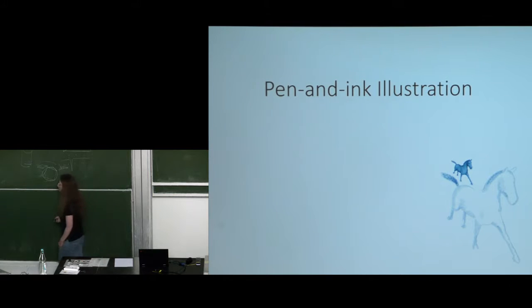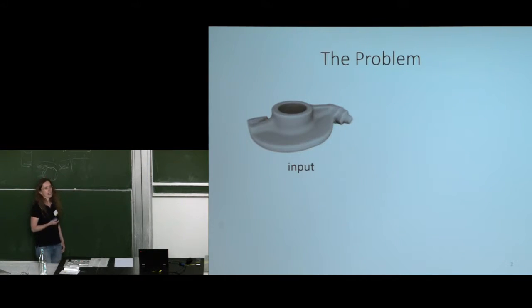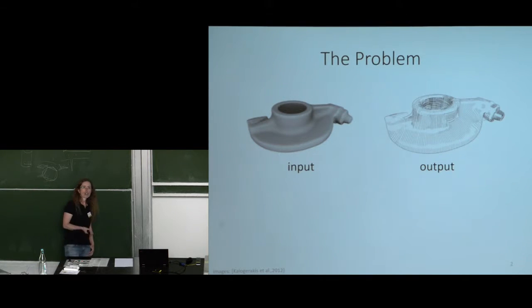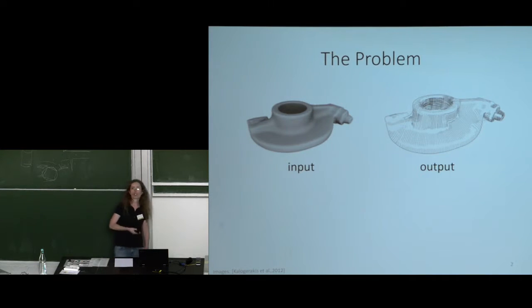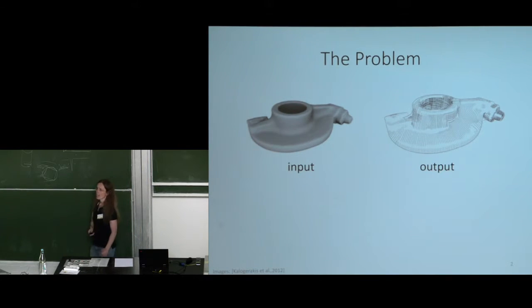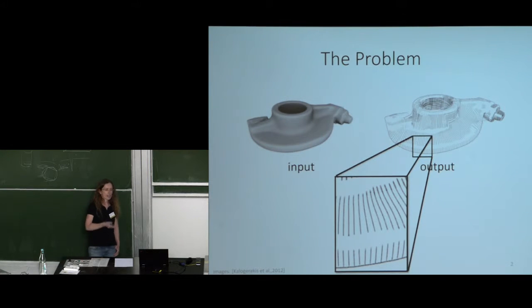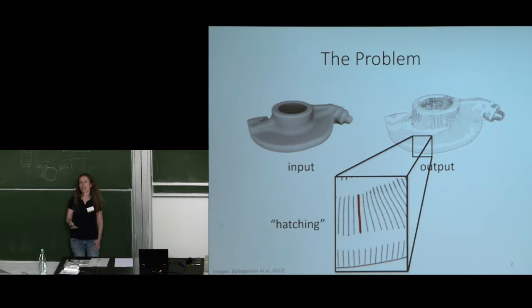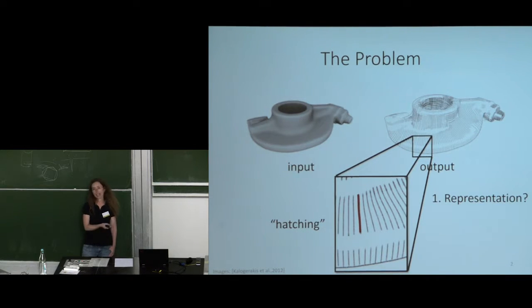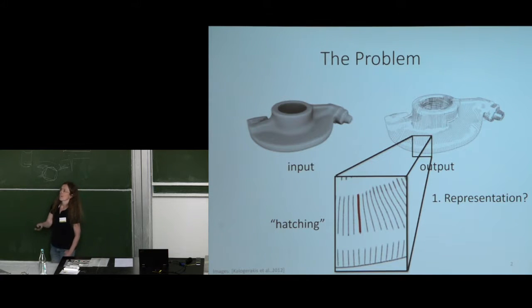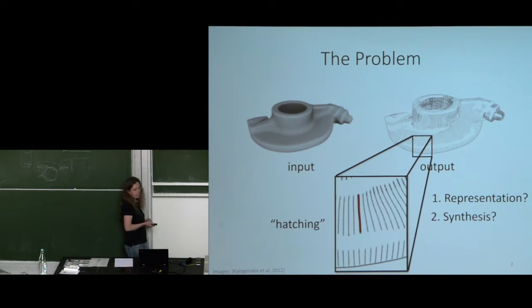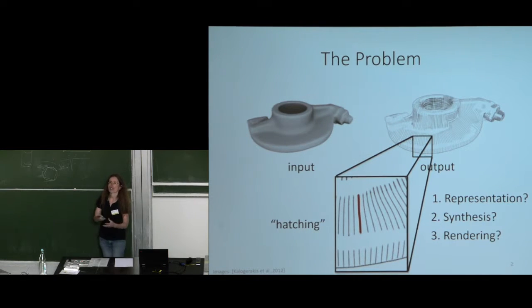The first application is non-photorealistic rendering. The problem is: you get a surface and you want to render it in a way that looks like an artist's work. Artists draw images using lines — if you zoom in on this rendering, you can see a lot of lines and each one is called a hatch. To generate this, you need to know how to represent hatches on the surface, how to generate them based on geometry, and how to draw them using the representation you have.